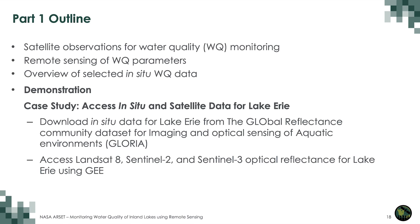The outline for this part includes: satellite observations for water quality monitoring, remote sensing of water quality parameters, an overview of selected in-situ water quality data, and a demonstration case study of Lake Erie. We will download in-situ data from the Global Reflectance Community Dataset for Imaging and Optical Sensing of Aquatic Environments, or GLORIA, and then access Landsat 8, Sentinel-2, and Sentinel-3 optical reflectance for Lake Erie using GEE.